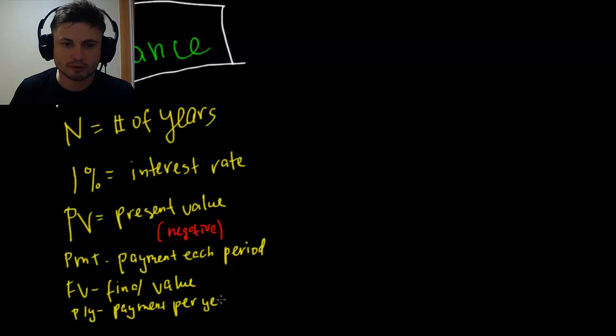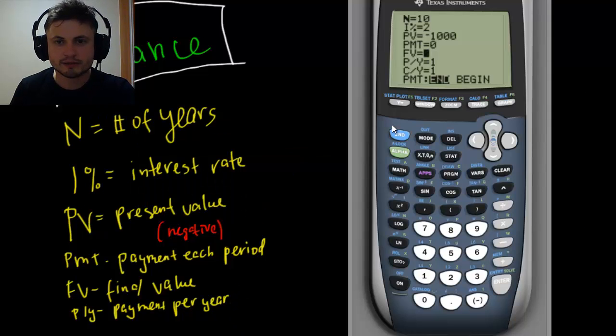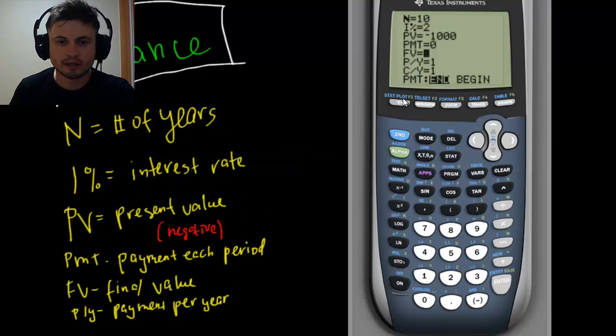So for example, when you decide to invest money more than once a year. And the last value right here, C divided by Y, I'm going to write it right here on top. C divided by Y, this is compounds per year.